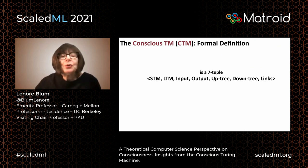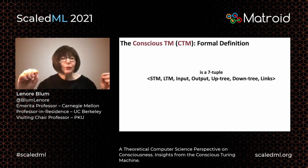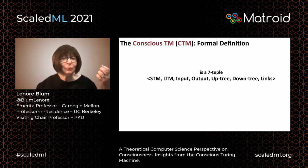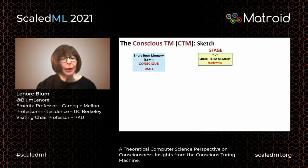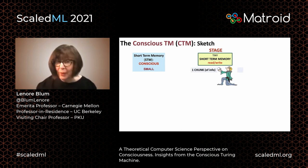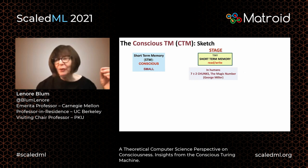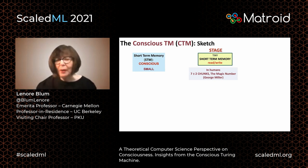The Conscious Turing Machine is defined as a seven-tuple: STM, LTM, input, output, up-tree, down-tree, and links — and coincidentally, the Turing machine is often defined as a seven-tuple. We start with a tiny short-term memory — a read-write memory, that's our stage — and the stage can hold only one chunk of information. This is not the seven plus or minus two chunks that George Miller talks about in the 1950s, but since we can get away with one chunk and we're looking for simplicity, one chunk will do.